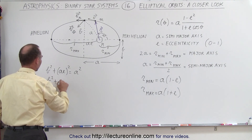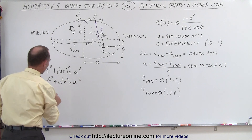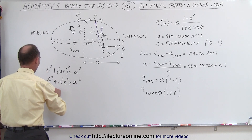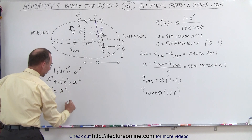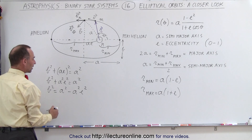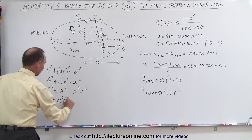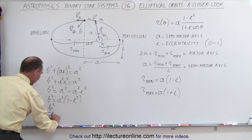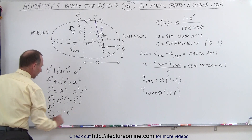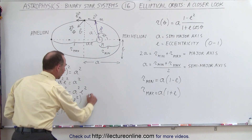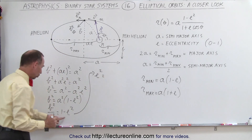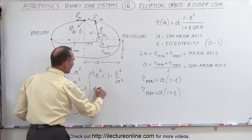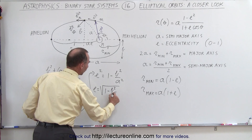We have b squared plus a squared e squared equals a squared. Moving terms around: b squared equals a squared minus a squared times e squared. Factoring out a squared gives b squared equals a squared times 1 minus e squared. Dividing both sides by a squared: b squared over a squared equals 1 minus e squared. Rearranging, e squared equals 1 minus b squared over a squared. Finally, e equals the square root of 1 minus b squared over a squared.